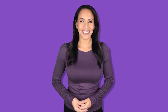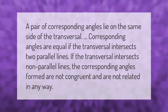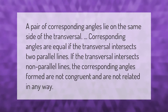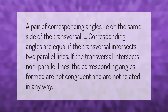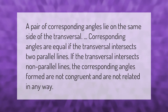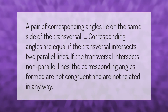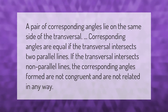A pair of corresponding angles lie on the same side of the transversal. Corresponding angles are equal if the transversal intersects two parallel lines. If the transversal intersects non-parallel lines, the corresponding angles formed are not congruent and are not related in any way.